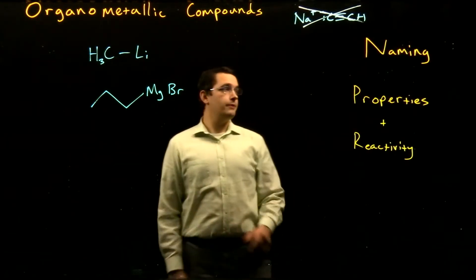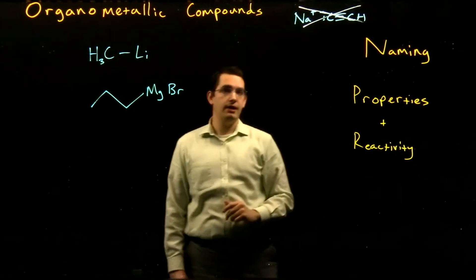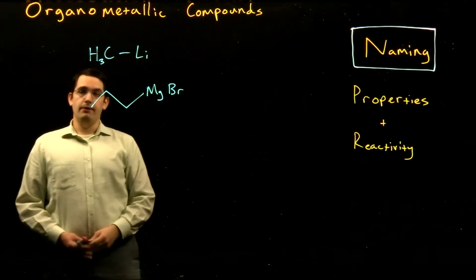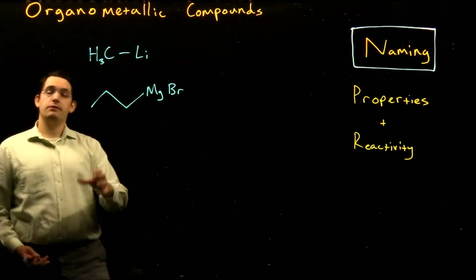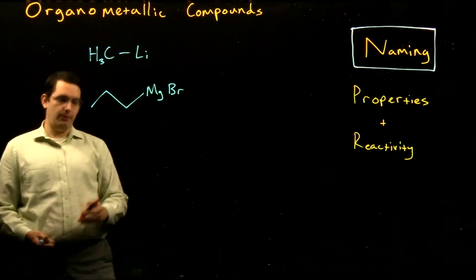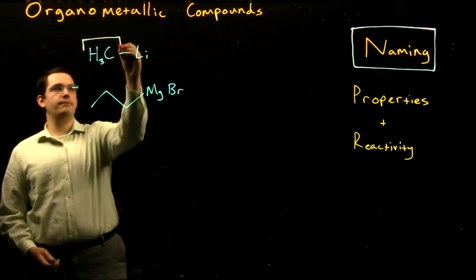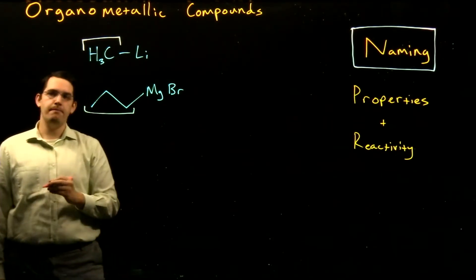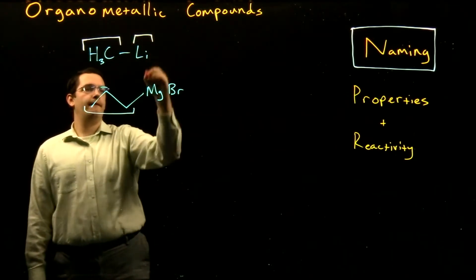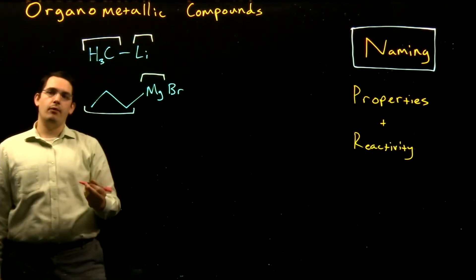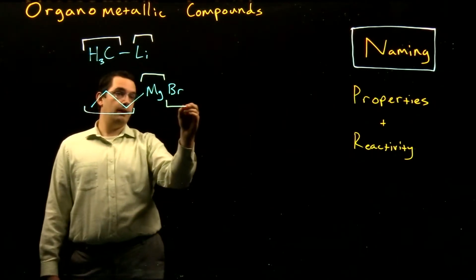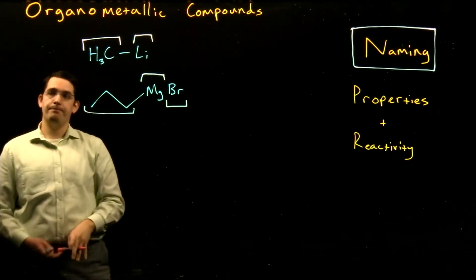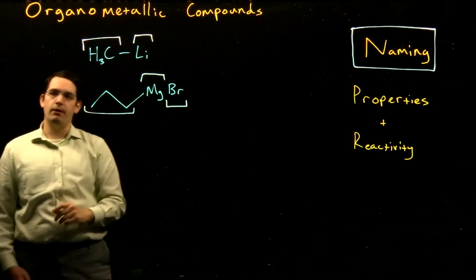As with our other functional groups, we're going to take a look at the naming, properties, and reactivity of our organometallic compounds. Any organometallic compound has two or maybe three different key components: we have the carbon portion, we have our metal such as lithium or magnesium, and then we may also have a more electronegative non-metal, such as our halogen shown here. We're going to need a separate naming component for each of these.